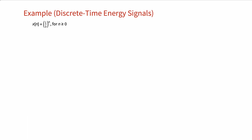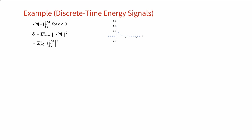As another example, consider the discrete time signal defined here, and again let's calculate the energy of the signal. The sequence is defined to be zero for negative values of n. Starting with the definition of the energy, this time we have a summation taken over values of n from zero to infinity. Evaluating this sum, we have 9/8. We could also try using the Wolfram Language — let's first define the sequence x(n), then taking the sum, we have the same result.